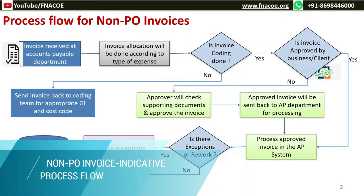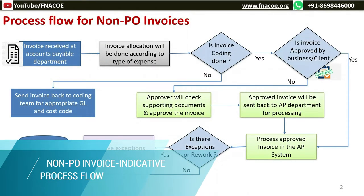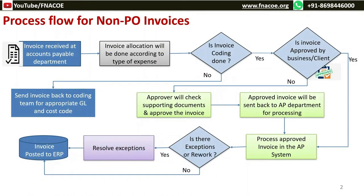Invoices are generally received at the front office and once received by the front office, they are sent to the accounts payable team. Invoices received in the AP team get allocated as per expense type.